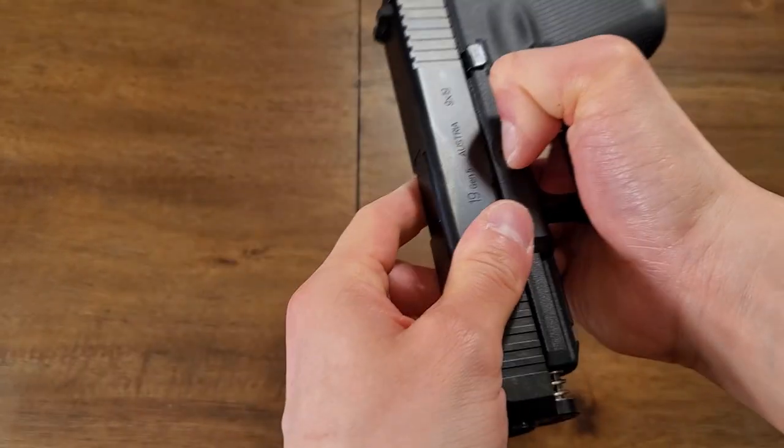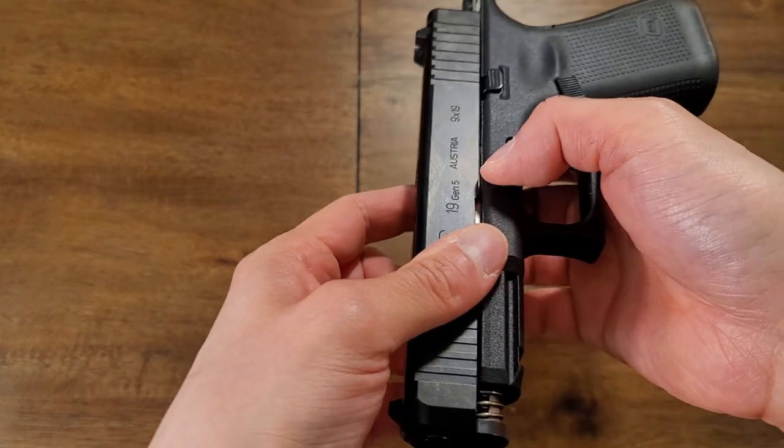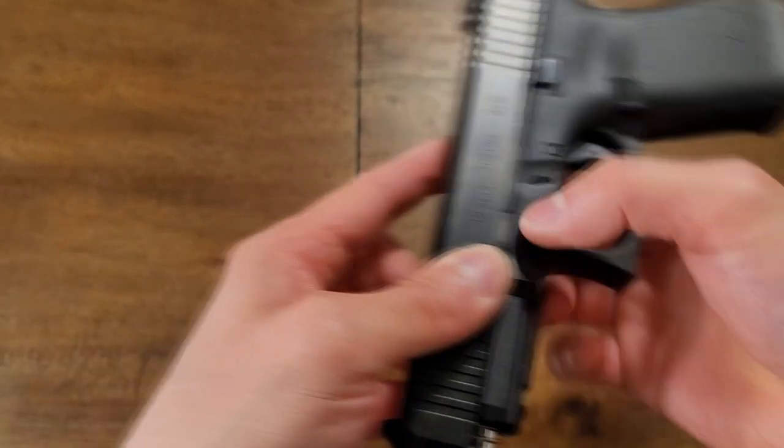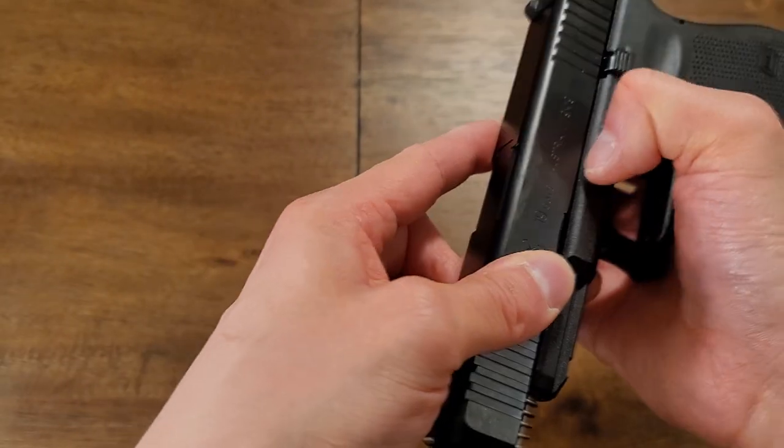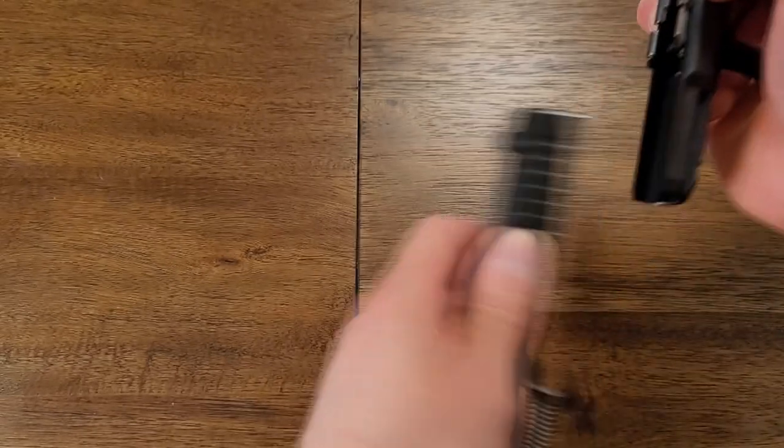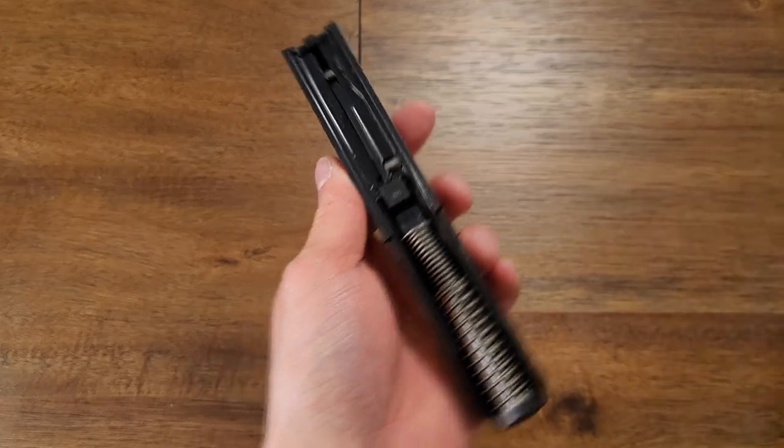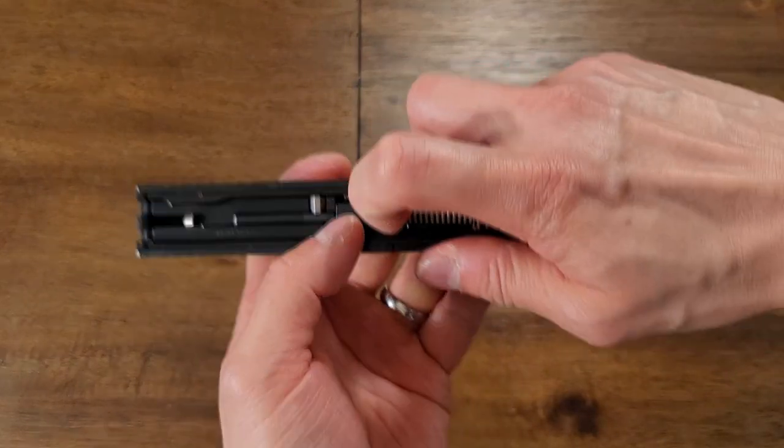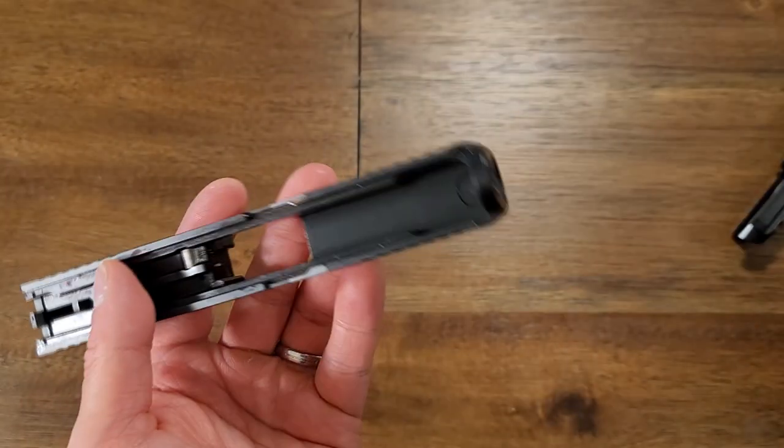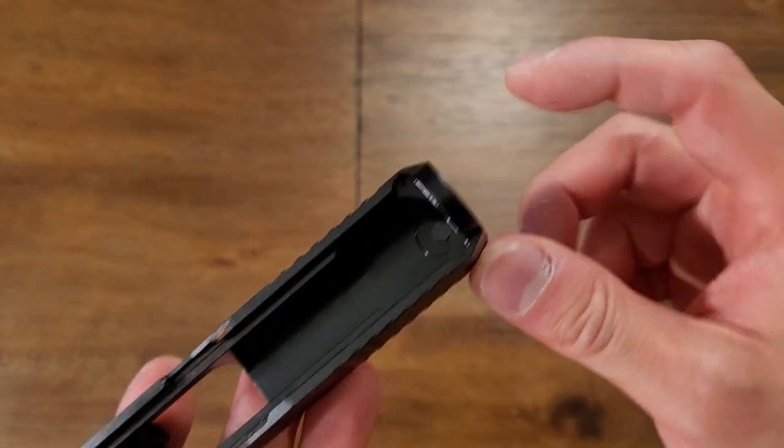Disassemble it by moving the slide forward a notch while pulling down on these levers simultaneously. It will free the slide and you're free to work on the internals of your pistol. Take out the guide rod, take out the barrel and we've exposed where we need to unscrew.